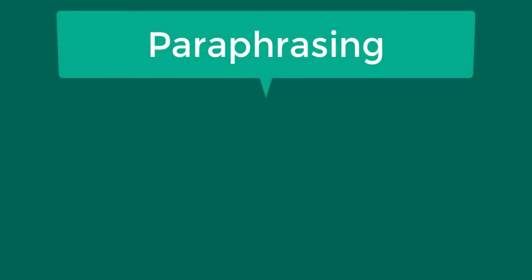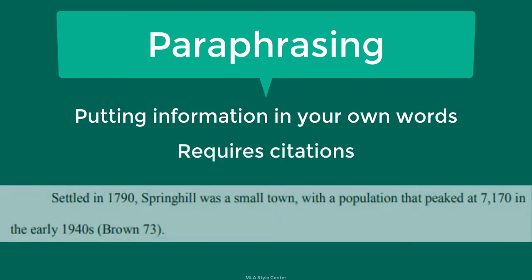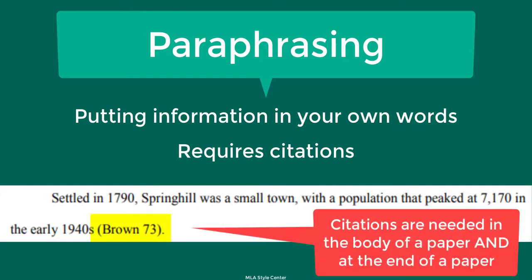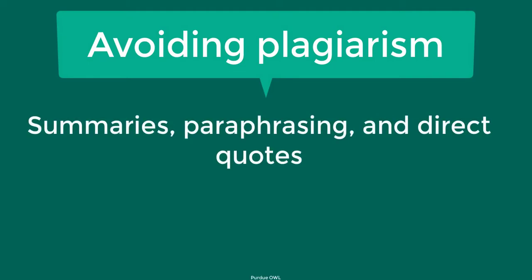Paraphrasing or rewording involves putting a passage from a source into your own words. Paraphrasing and summarizing also require citations. Even though the information will be in your own words, you still need to cite the source of your information. If there is no citation for information or ideas that are not your own, it is considered plagiarism. The use of summaries, paraphrases, and quotations are often combined in writing.